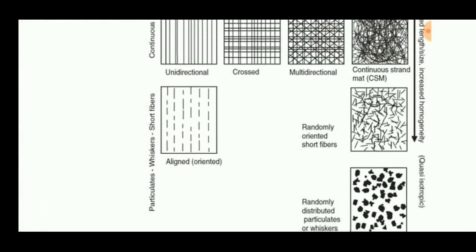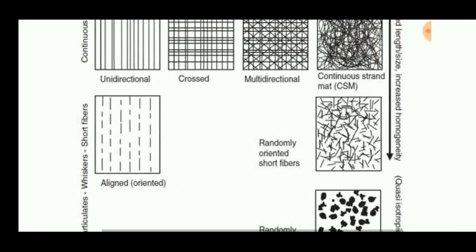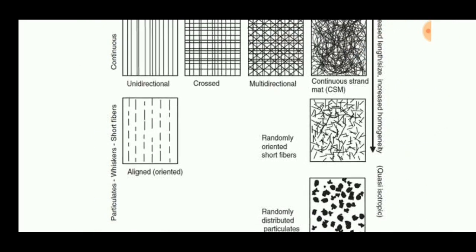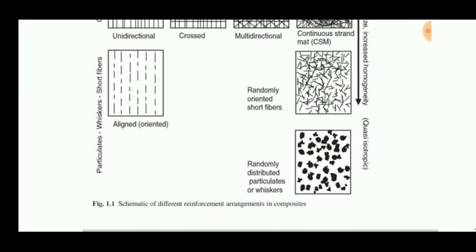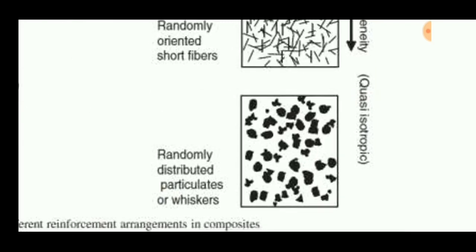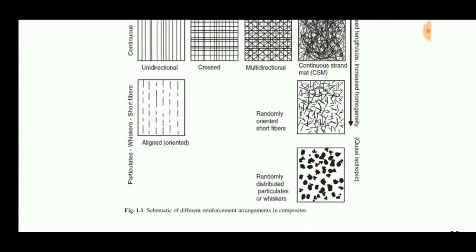Aligned oriented particulate, viscous, or short fibers can also be aligned in one direction but have only moderate strength. Randomly distributed whiskers, particles, or chopped strands have lower directional strength.